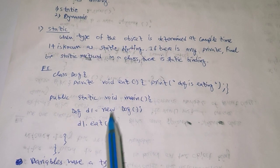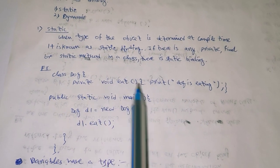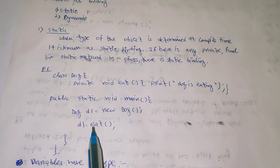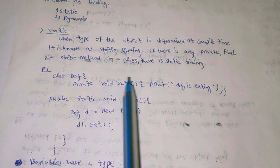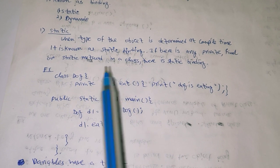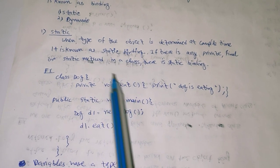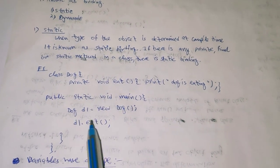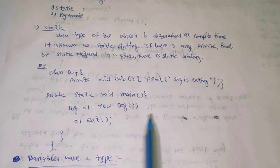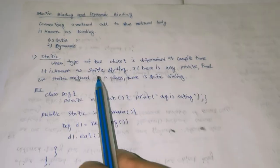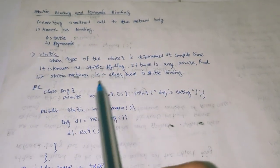There is no confusion about the type because there is only one class Dog, and there is only one method d1.eat(). There is no overloading concept and no overriding concept because only one class is present. So 'dog is eating' will be printed.